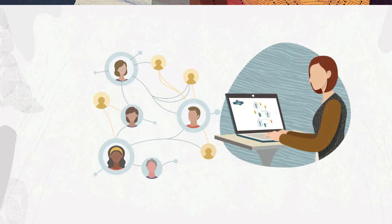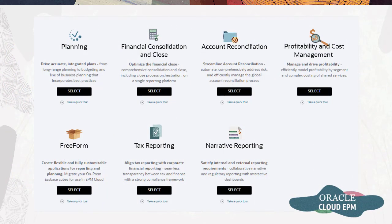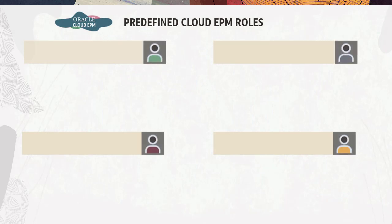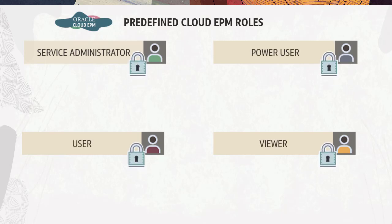Access to services is determined by roles assigned to a user. All Oracle Cloud Enterprise Performance Management services, other than Oracle Enterprise Data Management Cloud, use a common set of four predefined functional roles to control access to instances: Service Administrator, Power User, User, and Viewer.